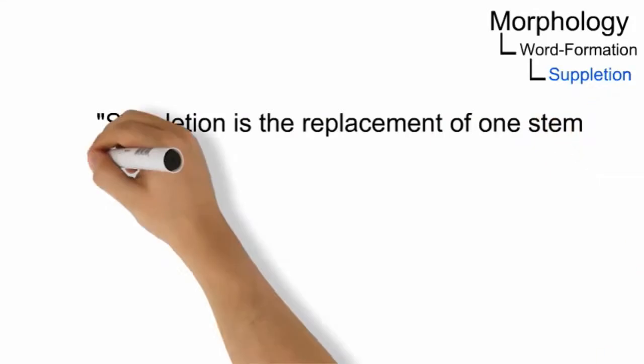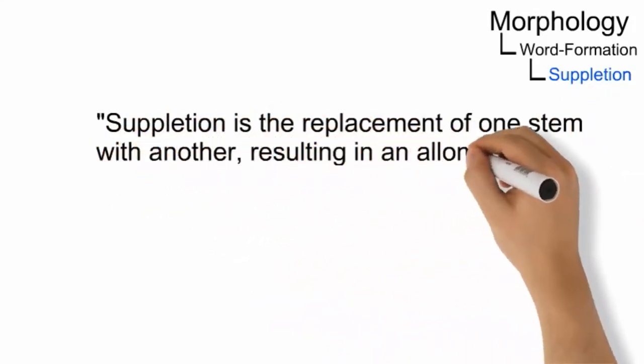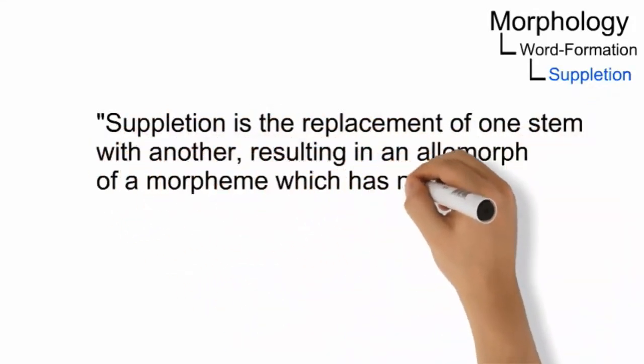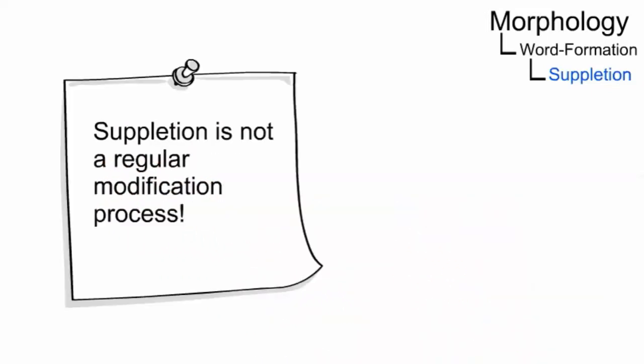Suppletion is the replacement of one stem with another, resulting in an allomorph of a morpheme which has no phonological similarity to the other allomorphs.